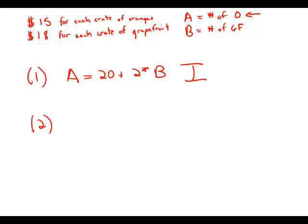Okay. So what that means is for every crate of oranges he ships, he gets $15. So 15 times A is the amount of money he made from oranges. 18 times B is the amount of money he made from grapefruit.